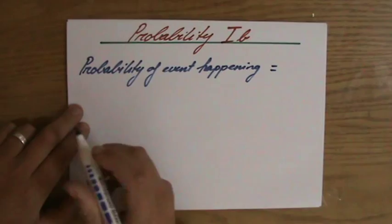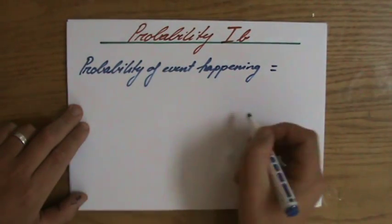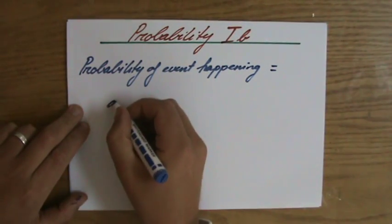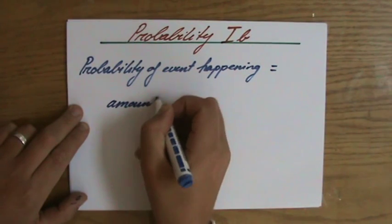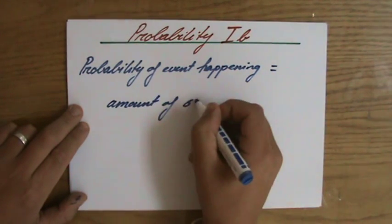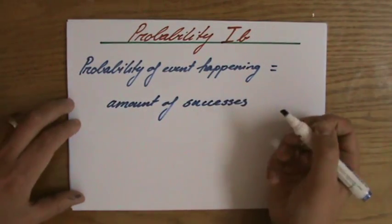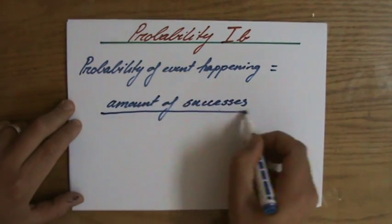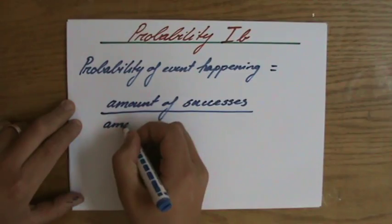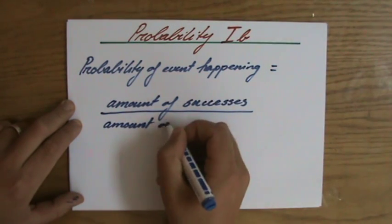and you see there's no space there, so I'm going to continue here, it is the amount of successes, if you can read my handwriting, it's the amount of successes over the amount of possibilities.